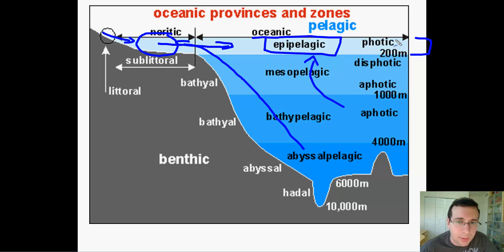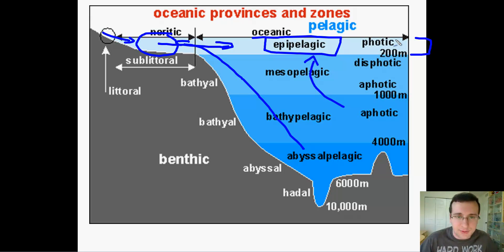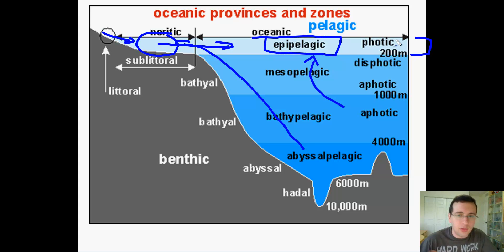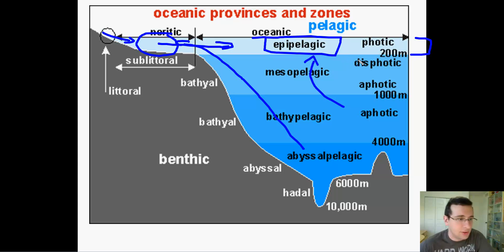Even though the epipelagic zone has less productivity per unit area, it is much more vast — 75% of the world is covered with oceans, so the majority of the world is covered with epipelagic zone. Therefore, even though algae is relatively rare here, there is so much of it in the world that this is the area responsible for the most photosynthesis on Earth. It is the most photosynthetically active area of the world and what generates most of the world's oxygen.